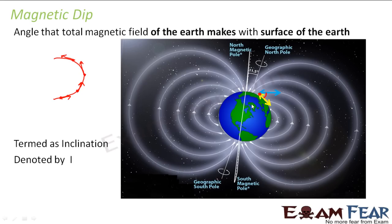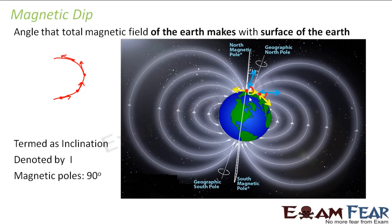This magnetic dip will also change as we change position. For example, if we take the magnetic needle to a higher position, the yellow line is the surface of the earth but the needle points more steeply. Looking at the magnetic field line, the angle of dip increases. Similarly, when we reach almost near the magnetic poles, the angle of dip or the magnetic dip becomes almost 90 degrees.